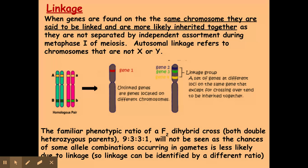As a result, these genes are more likely to be inherited together. Autosomal linkage is to do with genes that are not on sex chromosomes — so all your somatic chromosomes, meaning your body cells' chromosomes.